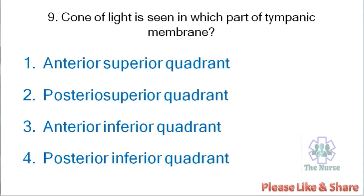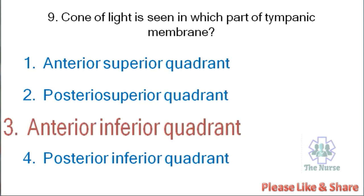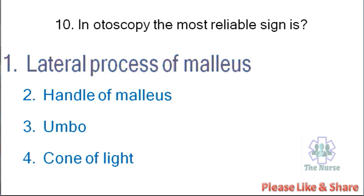Next question: Cone of light is seen in which part of the tympanic membrane? Options: anterior superior quadrant, posterior superior quadrant, anterior inferior quadrant, posterior inferior quadrant. Correct answer is anterior inferior quadrant. In otoscopy, the most reliable sign is — lateral process of malleus, handle of malleus, umbo, or cone of light? Correct answer is lateral process of malleus. In otoscopy, the lateral process of the malleus appears as shown.